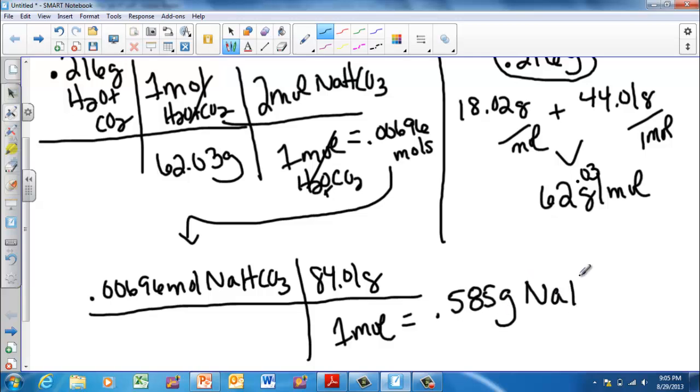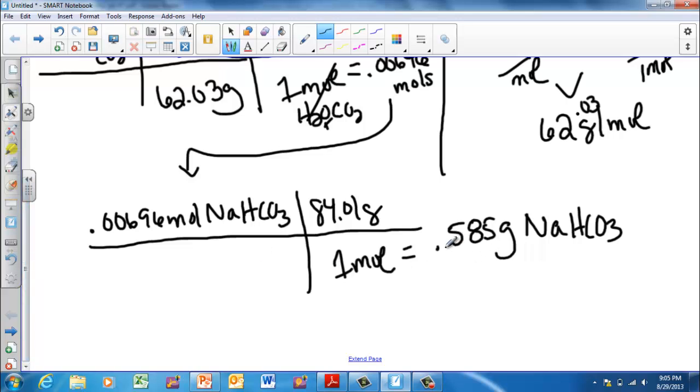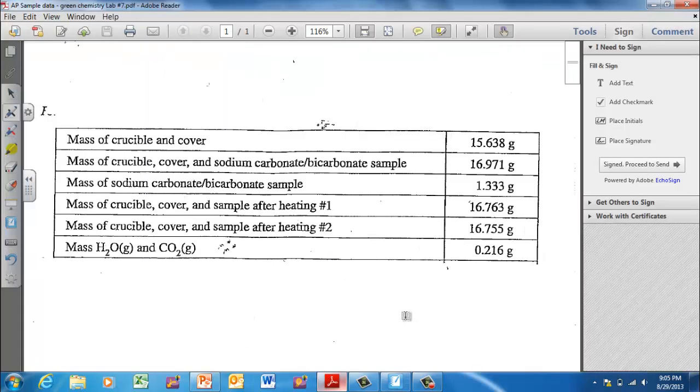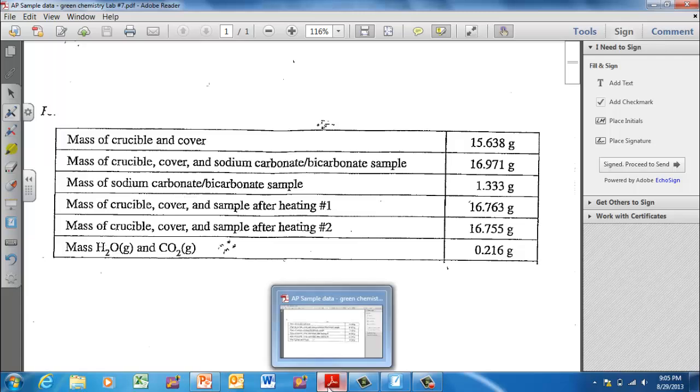So now I have a tangible amount with which to start with. So now, if I just go back and compare that to my original value, I'm going to go back to the data. Here's the original amount that I had was 1.33 grams.